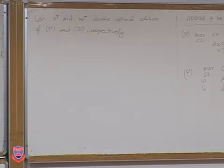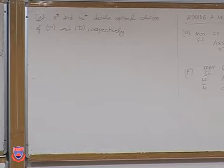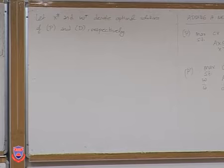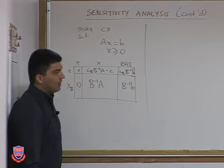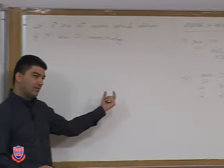What are the possible situations that can happen between the original primal problem and the new primal problem? First, note that the feasible region of the new primal problem cannot be larger than the feasible region of the previous problem, because we're introducing one more constraint. So x* may or may not be feasible for the new problem. x* satisfies all of the previous constraints, but it may or may not satisfy the new constraint.